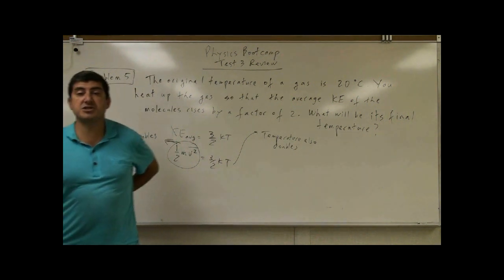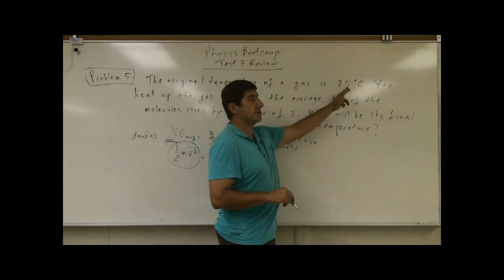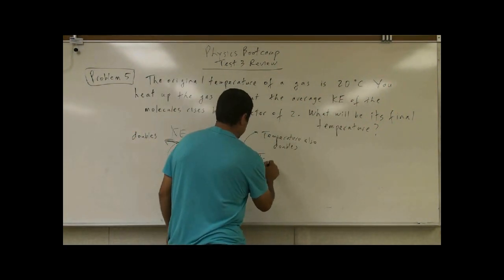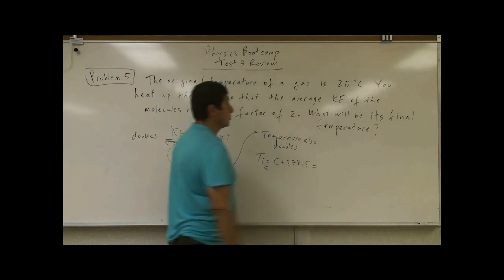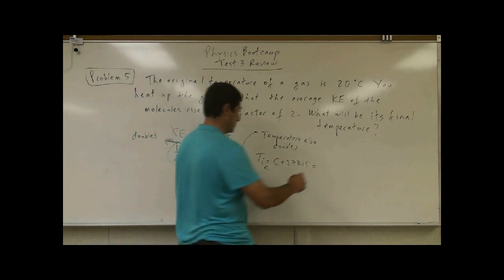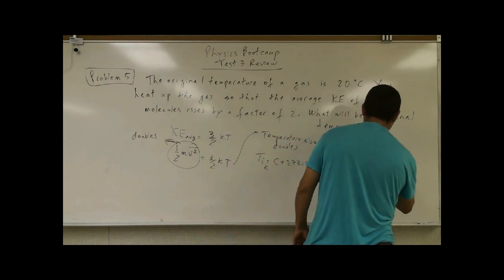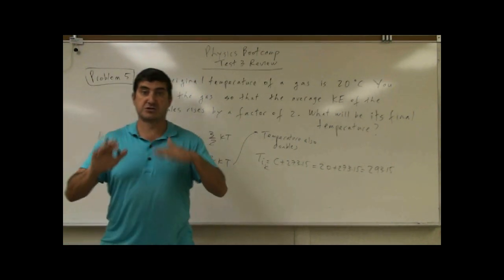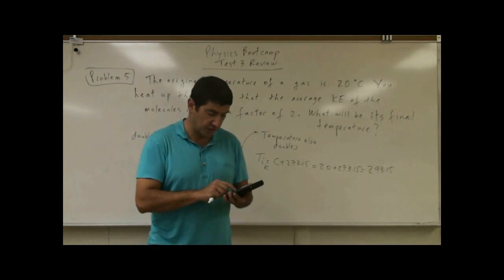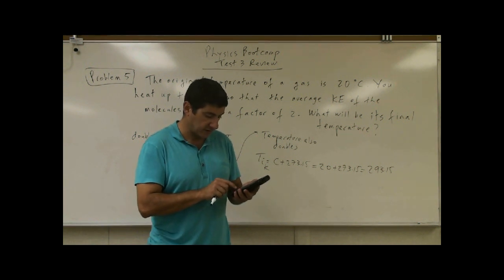But it doubles in degrees Kelvin, not in Celsius — in Kelvin. So what we have to do is find the initial temperature in Kelvin. Remember, it's Celsius plus 273.15. So 20 plus 273.15 gives you 293.15. Forget about the fact that the temperature is 20 — the real temperature is 293.15K. Now we've got to double the 293.15.